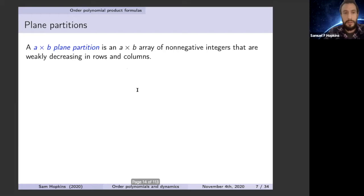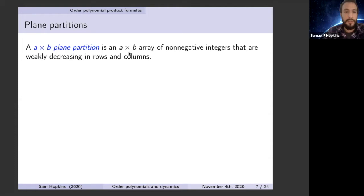Let me start by talking about order polynomials and product formulas, beginning with the first example. What are plane partitions? An a-by-b plane partition is an a-by-b array of non-negative integers which is weakly decreasing in rows and columns.